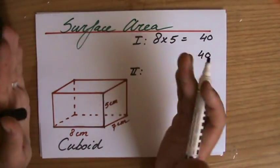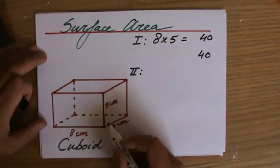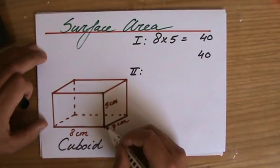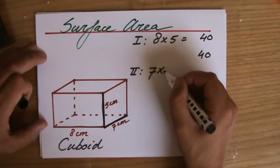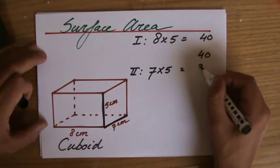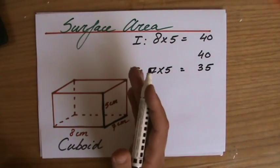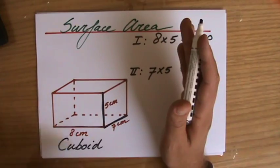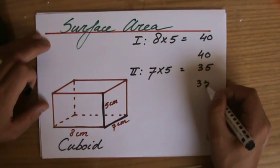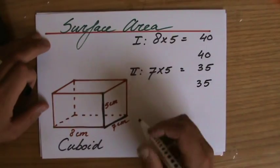What I'm gonna do now, I'm gonna do the sides. That is 7 times 5 and that's also a rectangle. 7 times 5, write it down, that is 35. And I realize that the right side equals the left side, that's one of the properties of a cuboid. So I have another 35 on the left.